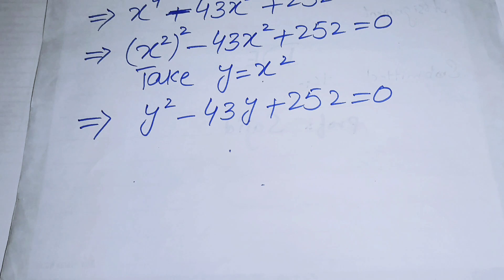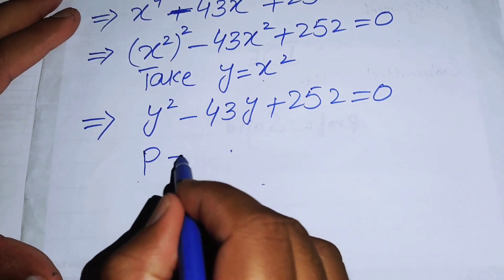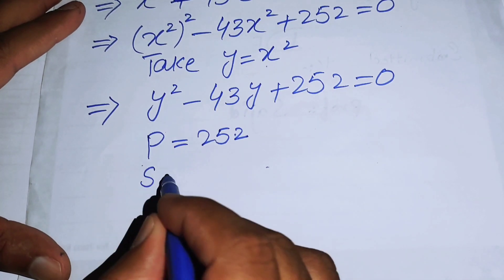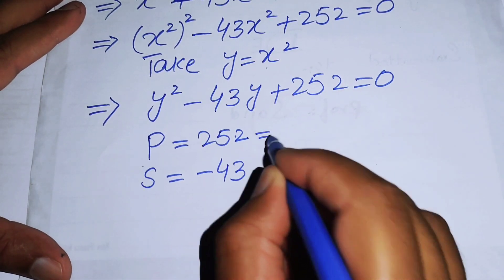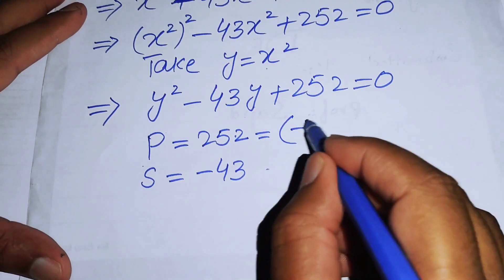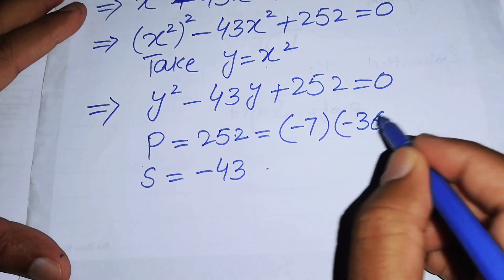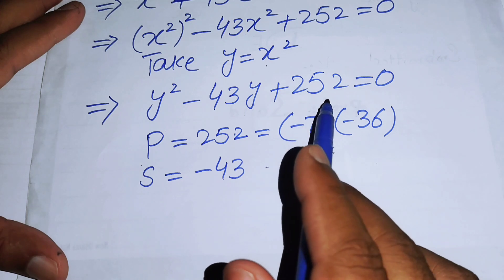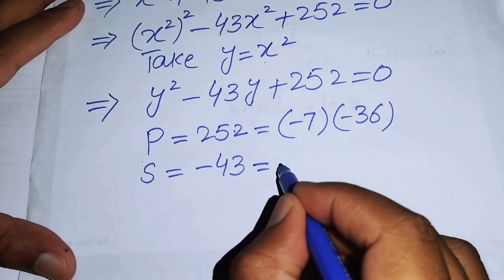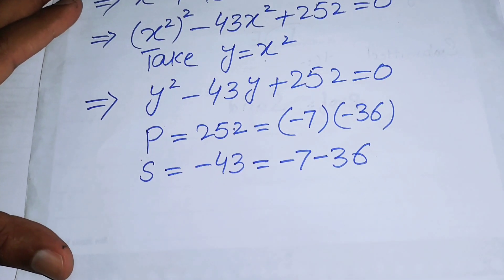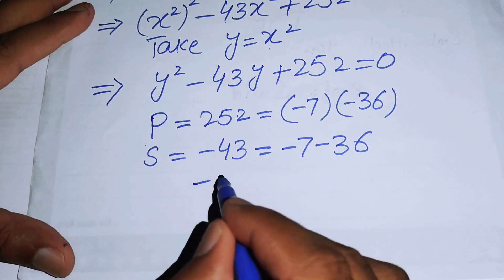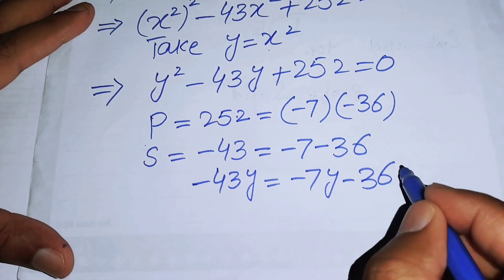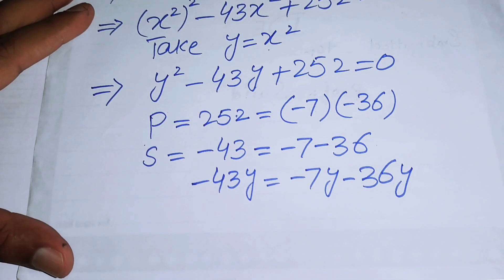Now I will factor this equation. We need two numbers whose product is 252 and whose sum is -43. Those two numbers are -7 and -36, because (-7) × (-36) = 252 and (-7) + (-36) = -43. So -43y can be split as -7y - 36y.